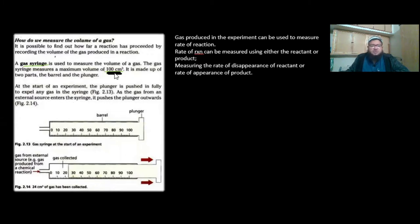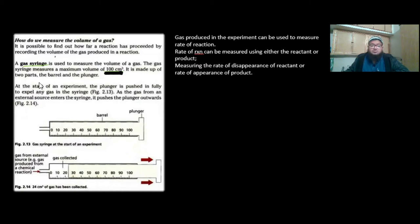The standard gas syringe used in our school labs is 100 cm³. If you are asked to write down the value for the maximum volume of a gas syringe, it's 100 cm³ that you're going to write or choose from the MCQ. Now, it is made up of two parts: the barrel and a plunger.